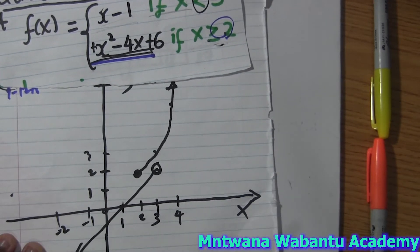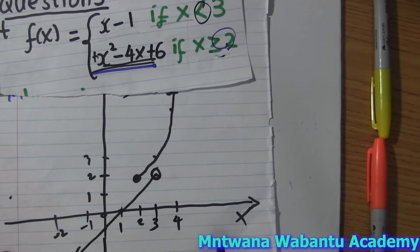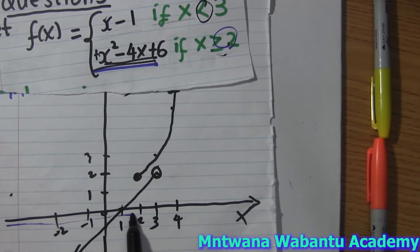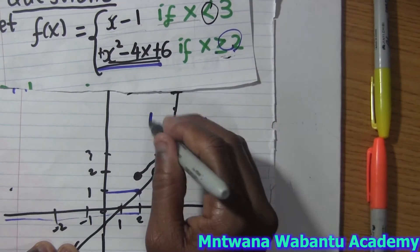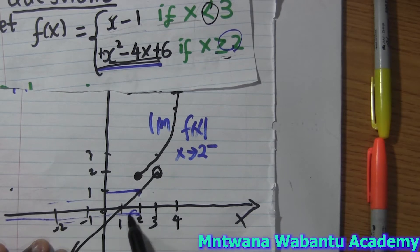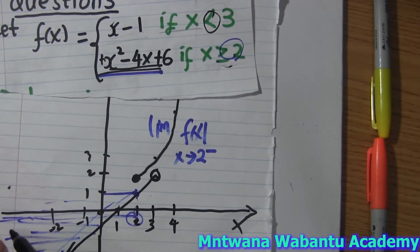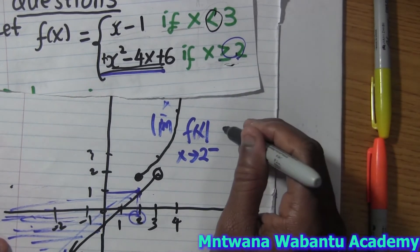Now if we use the graph to check the limits: if I approach x = 2 from the left, I'm travelling along the linear graph. Coming from the left, the graph I'm going to touch first is the linear piece, and the value of y equals 1. So the left-hand limit from the graph confirms f(x) approaches 1.